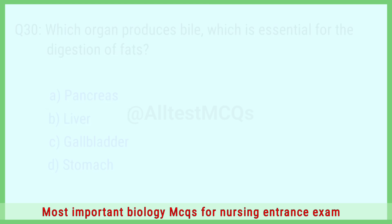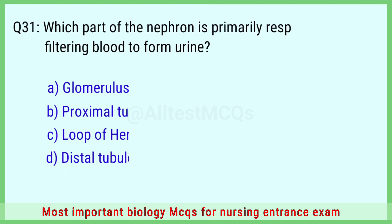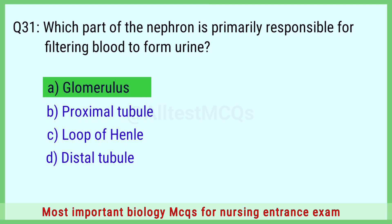Question number 31: Which part of the nephron is primarily responsible for filtering blood to form urine? The right answer is option A: glomerulus.